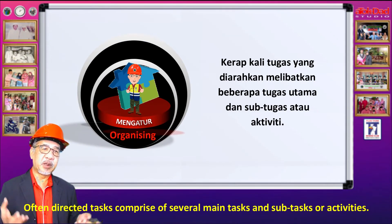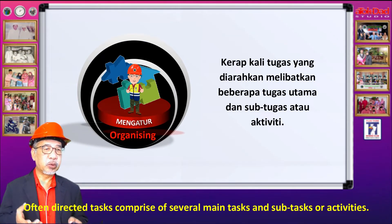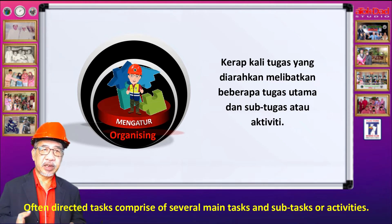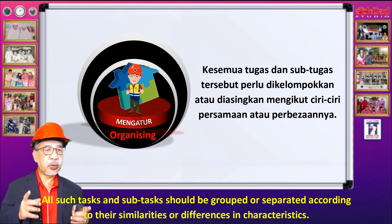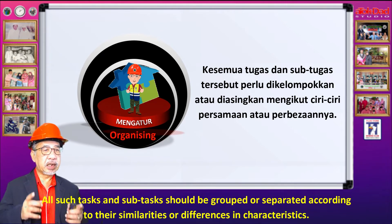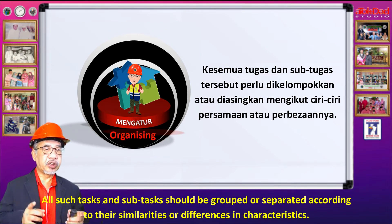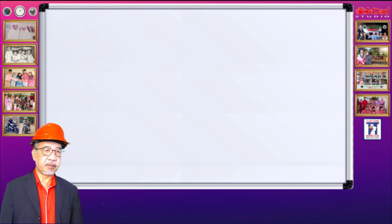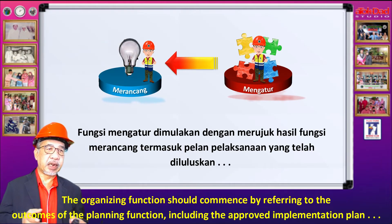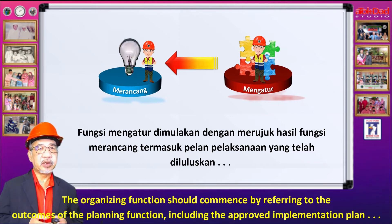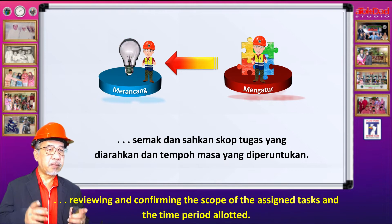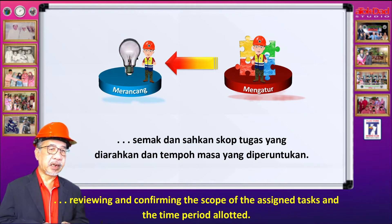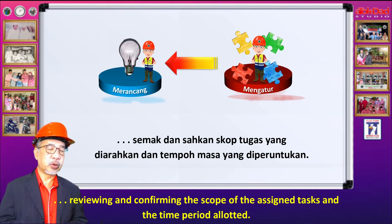Kerap kali tugas yang diarahkan melibatkan beberapa tugas utama dan sub-tugas atau aktiviti. Kesemua tugas dan sub-tugas tersebut perlu dikelompokkan atau diasingkan mengikut ciri-ciri persamaan atau perbezaannya. Fungsi mengatur perlu dimulakan dengan merujuk kepada hasil fungsi merancang termasuk pelan-pelan pelaksanaan yang telah diluluskan. Semak dan sahkan skop tugas yang diarahkan dan tempoh masa yang diuntukkan.